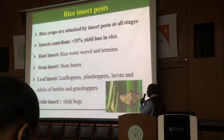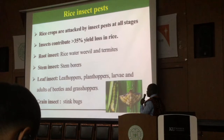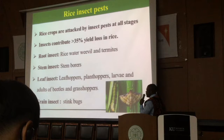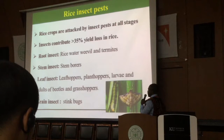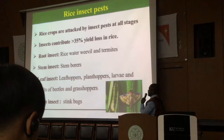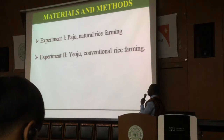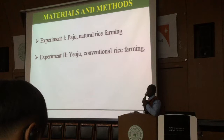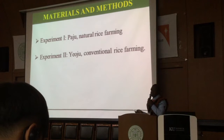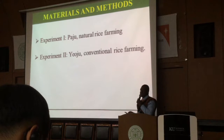plant hoppers and larvae of adults, beetles and grasshoppers that generally attack the leaves, and the stem borer is the common enemy to the rice grain. This is an example of the stem worm.